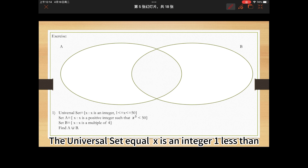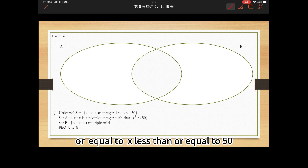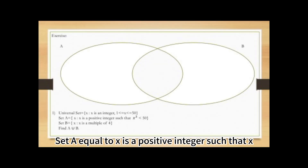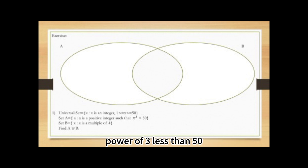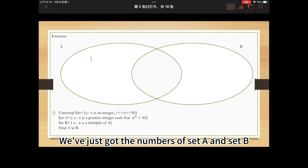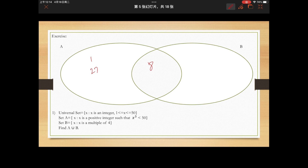The universal set equals x is an integer, 1 ≤ x ≤ 50. Set A equals x is a positive integer such that x³ < 50. Set B equals x is a multiple of 4. We've already found the elements of set A and set B. Now write the numbers in the circles.